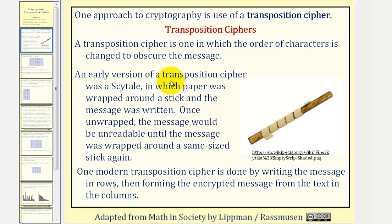An early version of a transposition cipher was a scytale in which paper was wrapped around a stick and the message was written. Once unwrapped, the message would be unreadable until the message was wrapped around a similar sized stick again.